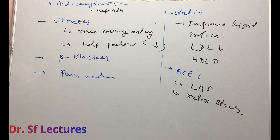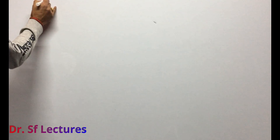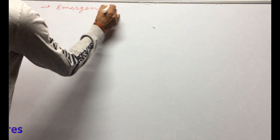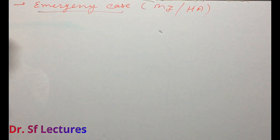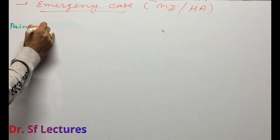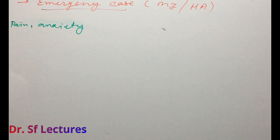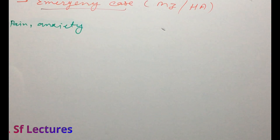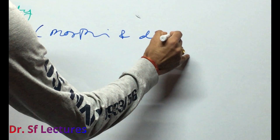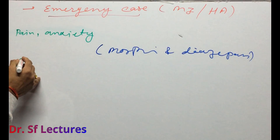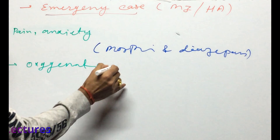In an emergency situation, we can use some special types of therapy or drug combinations. In an emergency case of myocardial infarction or heart attack, first we address pain and anxiety. If the patient is taking a non-steroidal anti-inflammatory drug and is not feeling well, we can use morphine and diazepam. We also give oxygenation therapy — oxygen via inhalation.